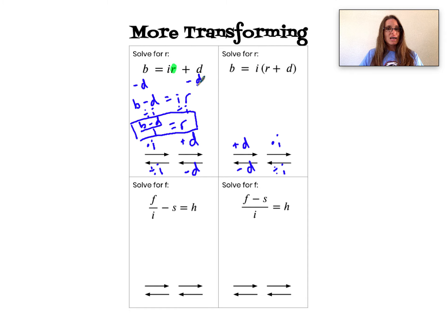In this case I'm not subtracting d first, I'm first dividing by i. B divided by i, I'm going to write with that fraction bar. And then i times r plus d divided by i is just r plus d.